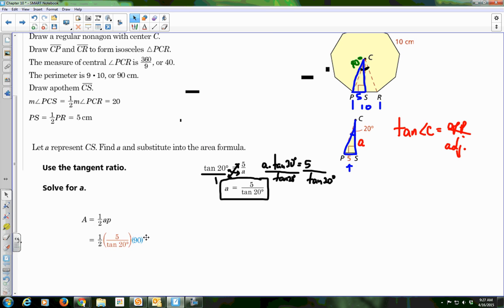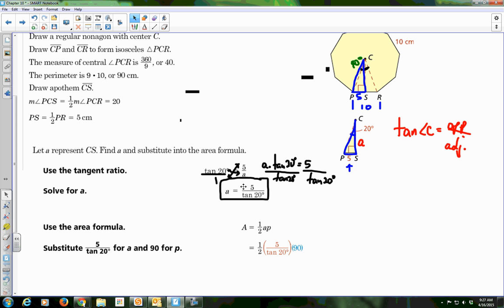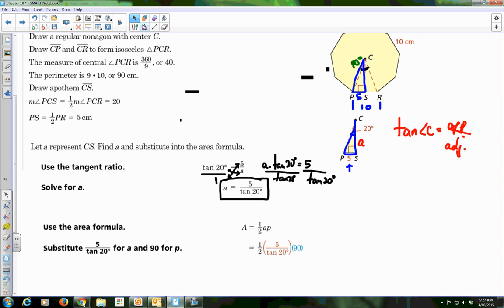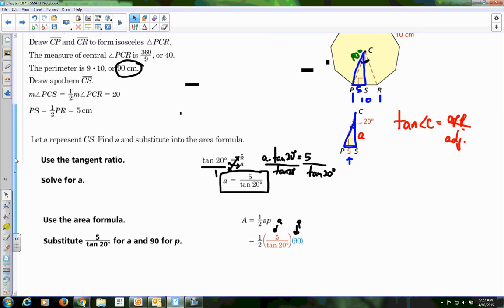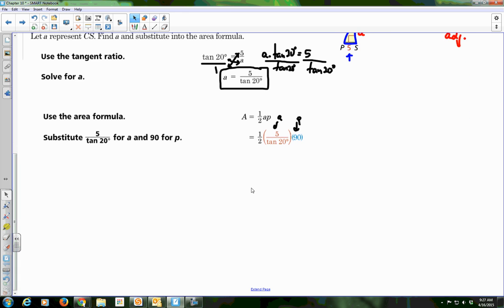So now that we have that, we can take our area formula. Area is 1 half times the apothem, which is this value, times the perimeter, which in case you forgot is this value. So we plug in, here's A, and here's the perimeter P, and then we just do a nice little calculator chug to find that.